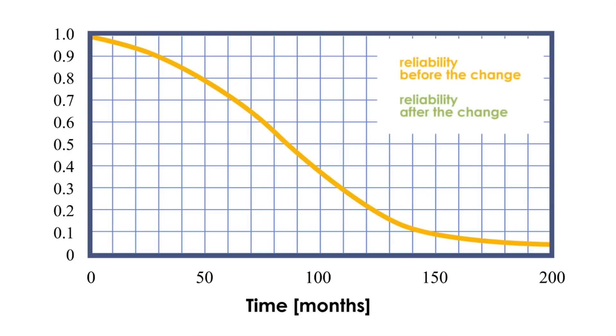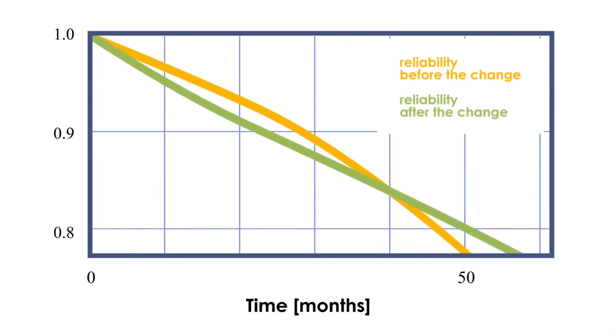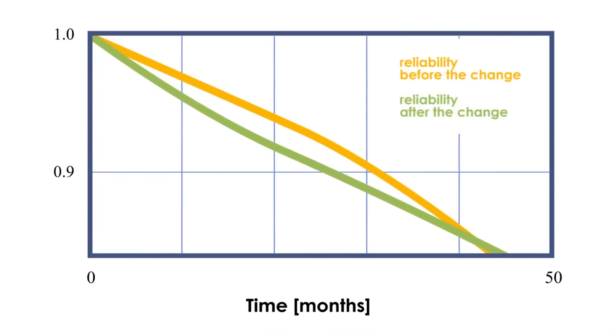If we compare the reliability curves of the pedal assembly before and after the improvement, we can clearly see significant improvement in the mean time to failure. But if we zoom into the upper left corner, we can also see a drop of reliability.